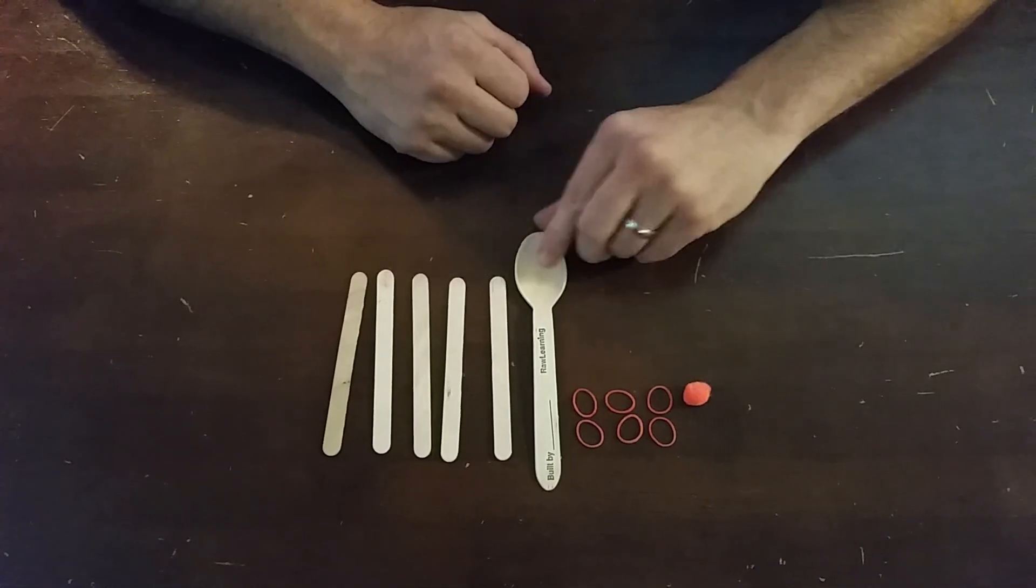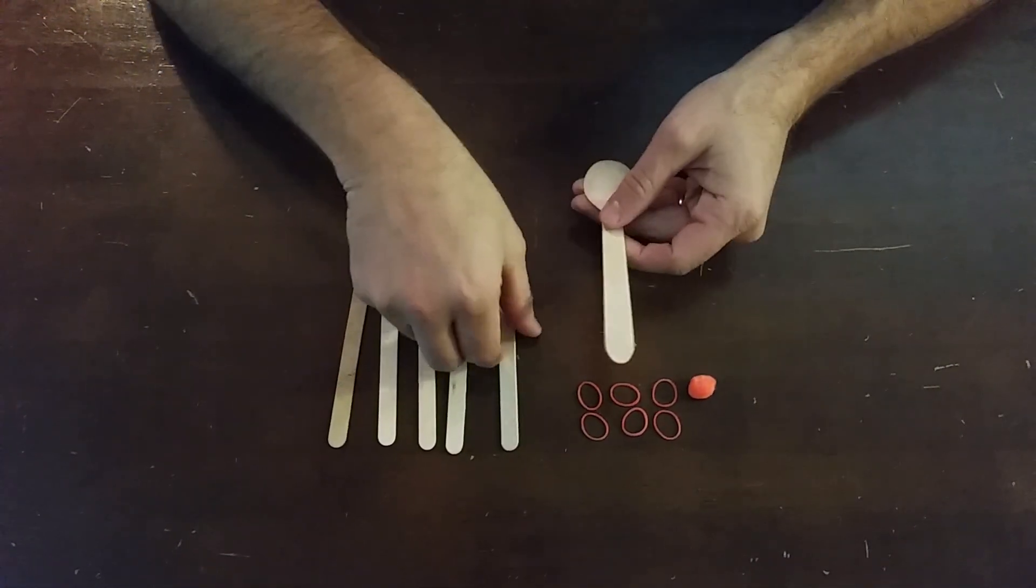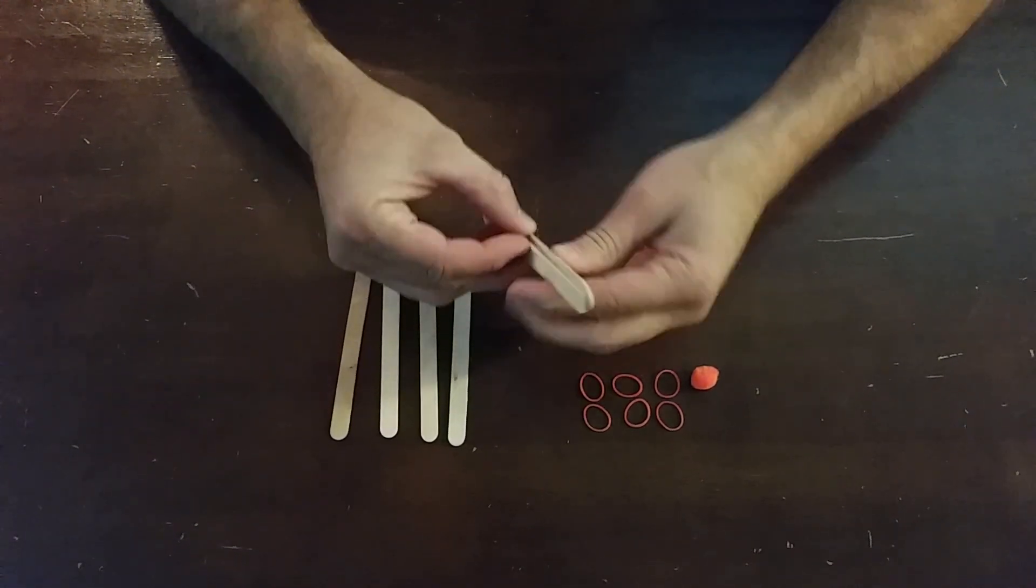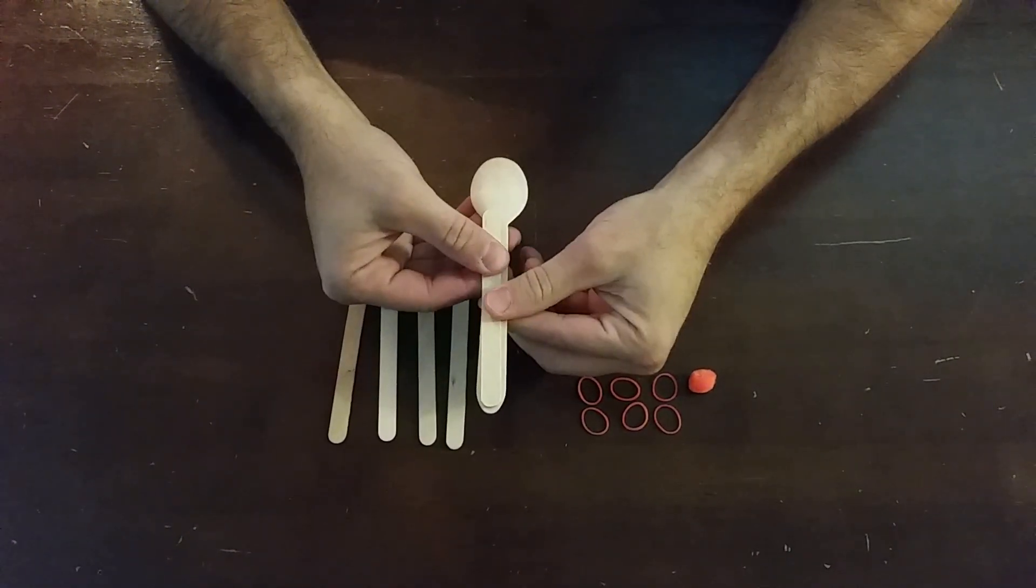Okay, so the first step is to get the spoon and one of the popsicle sticks. You're going to put the popsicle stick underneath the spoon like this. It should look like that.